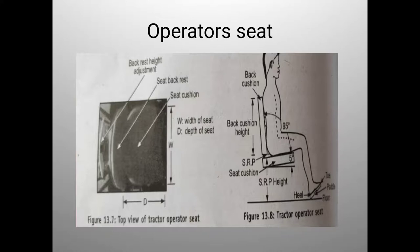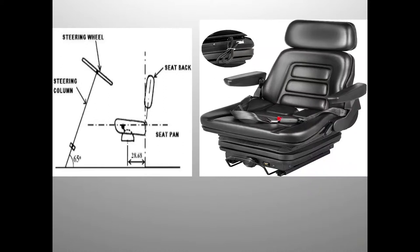A figure is shown of a driver seated on a seat, illustrating the back cushion, back cushion height, seat cushion, SRP height, heel floor pad, and the angle of 95 degrees from the bottom to the bone section. This is the type of seat provided in automobile vehicles like cars.